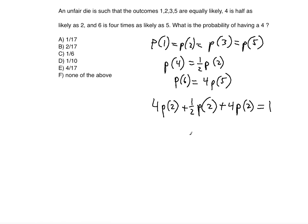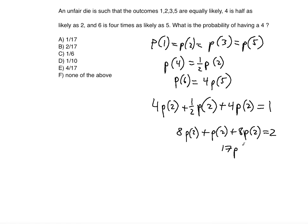Multiplying both sides of the equation by 2 to clear the fraction, we get 8·P(2) + 1·P(2) + 8·P(2) = 2. Combining all like terms, 8 + 1 + 8 = 17, so 17·P(2) = 2, which gives P(2) = 2/17.